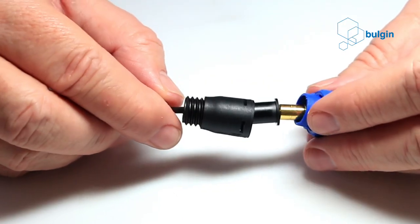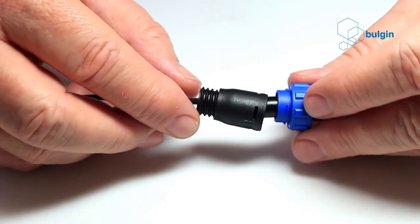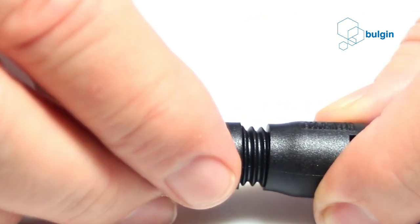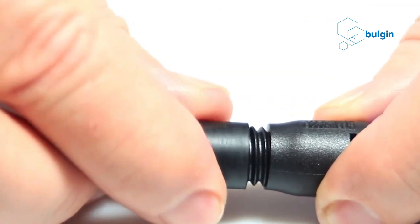Circular buccaneer connectors from Bulgin are available with the choice of screw, crimp, and solder terminations. The best choice for your application will depend on your circumstances, as each method has its advantages.